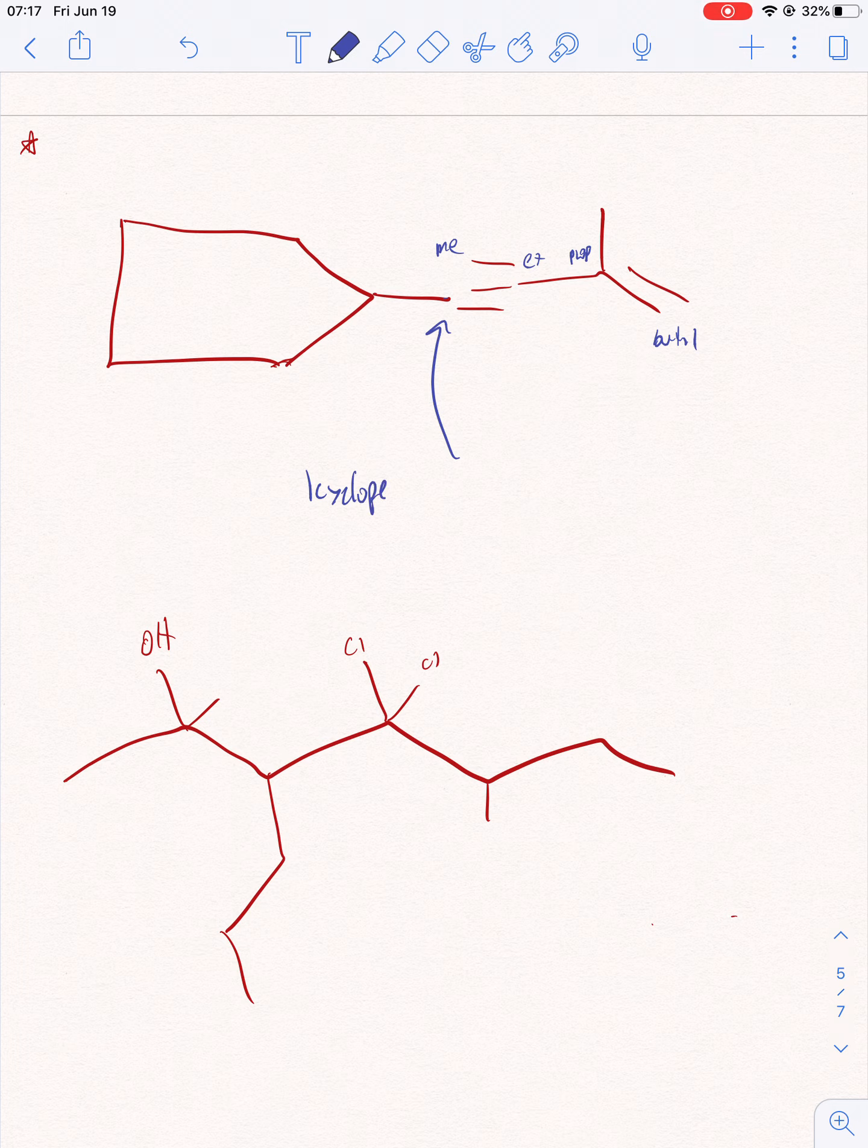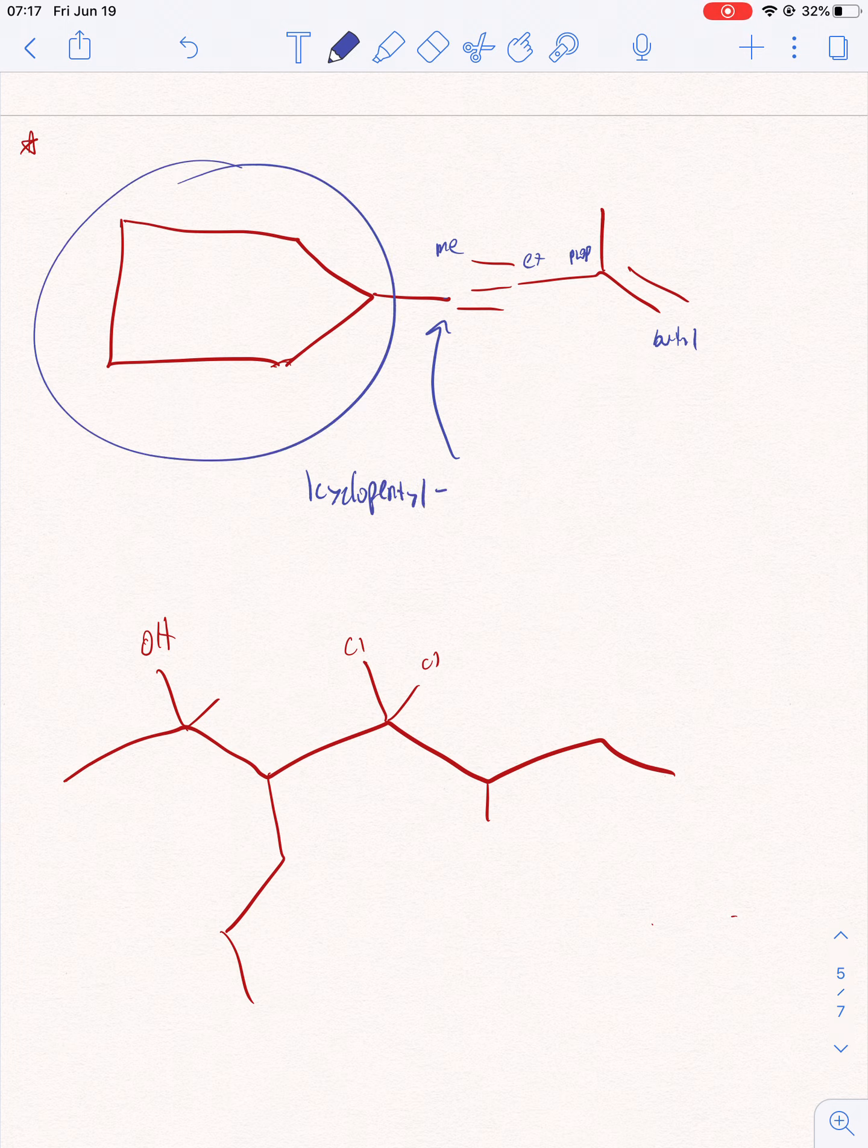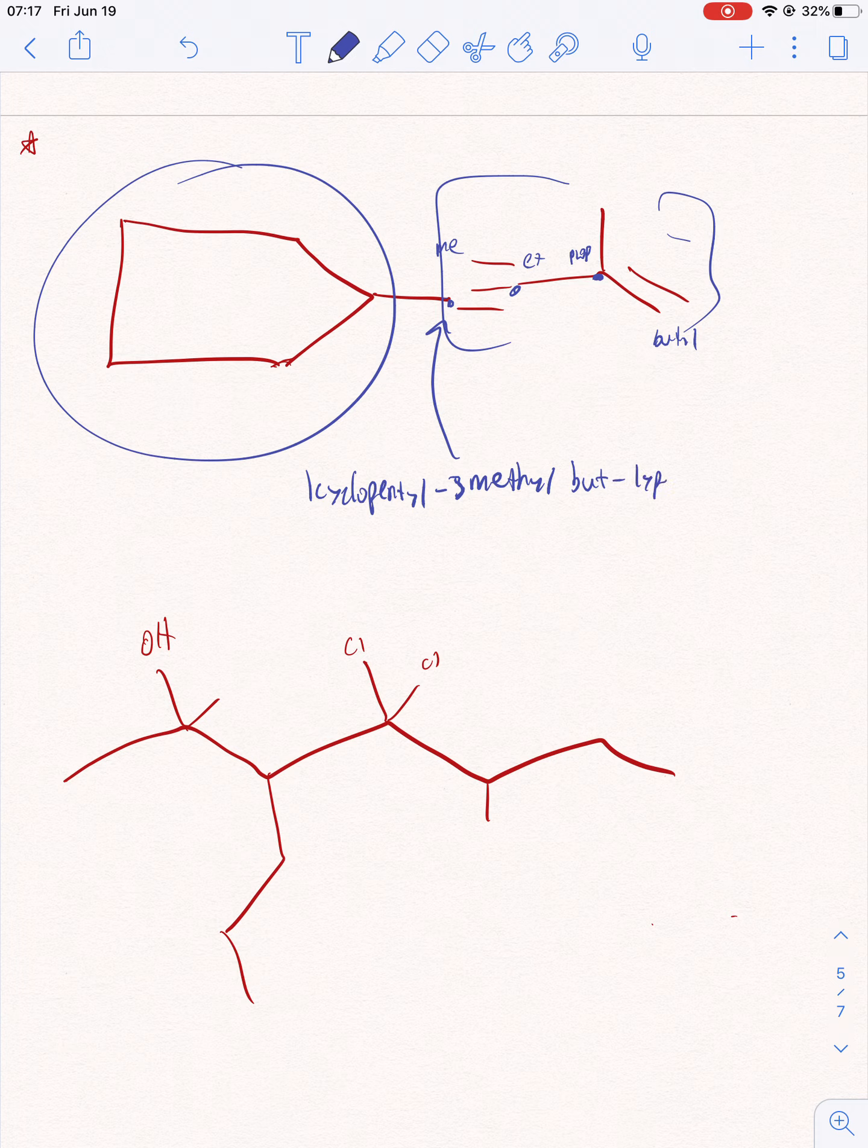It's gonna be one cyclopentyl because it's a cyclopentyl group. One, two, three - three methyl. Now we get into our main chain. So remember this is a butyl, so it's gonna be one cyclopentyl, three methyl, but one - one triple bond in the first carbon.